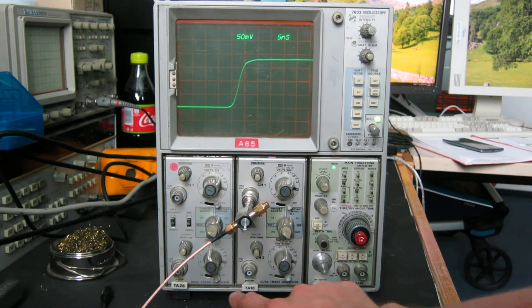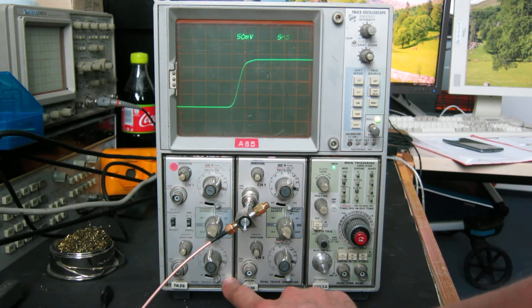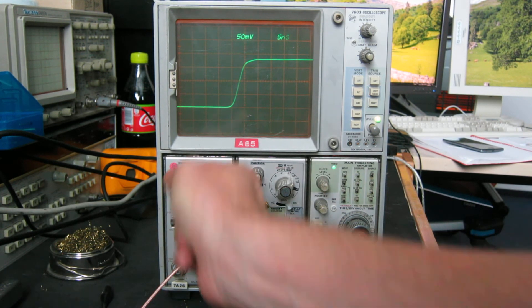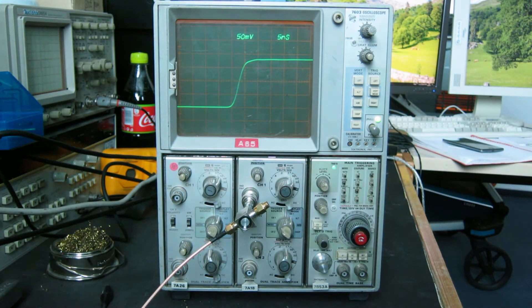It's all in good shape, the 7A26 plug-in. It's a bit faded, I think it spent time in a lab looking at the sun, but it works well enough. And there's a chip on this knob here, but it's still perfectly usable. So there you go, that's the 7603 scope.